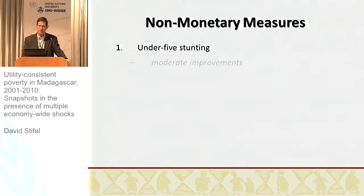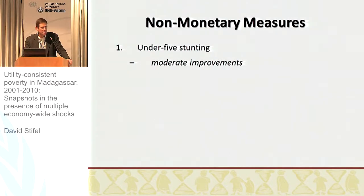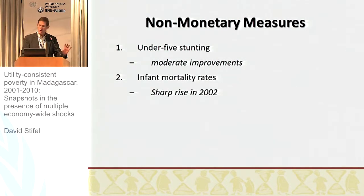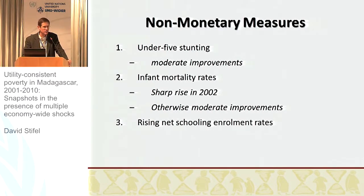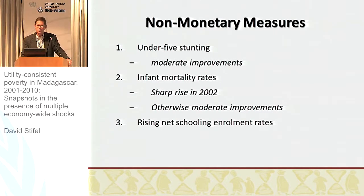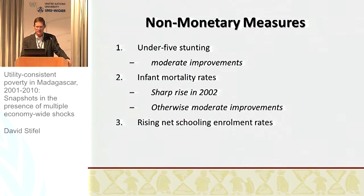Our non-monetary measures: under-five stunting over the course of the decade saw moderate improvements. Infant mortality rates, aside from a sharp rise in 2002 following the political crisis, otherwise saw moderate improvements over the decade. We also saw persistent rising net school enrollment rates — still low in general, 75 percent for primary, but quite low for secondary, on the order of 25 percent for lower secondary and even lower for the highest level, which will be a challenge for opportunities and poverty reduction in the future.